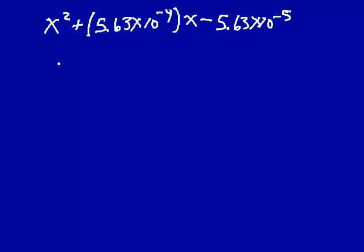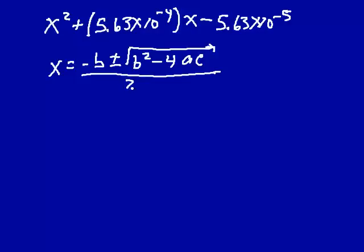If we put it in the canonical form here, we'll have x squared plus 5.63 times 10 to the minus 4th x minus 5.63 times 10 to the minus 5th. There's our quadratic equation. Now we know that we can say x is equal to minus b plus or minus the square root of b squared minus 4 times a times c, where this is a, this is b, this is c. Divide all of this by 2a.